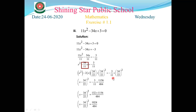In the fourth step, we make the formula on the left-hand side. Here a is x and b is 34/22. Since the middle term is negative, we use (a - b)². On the right-hand side, open the square and take the LCM.